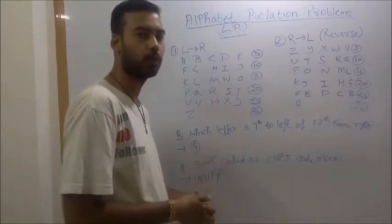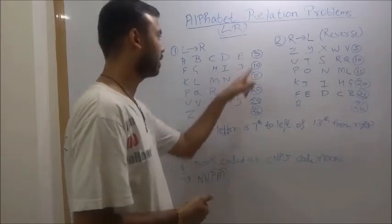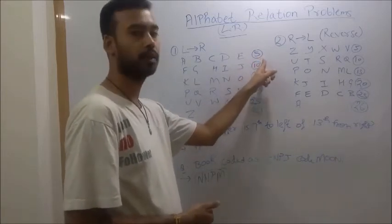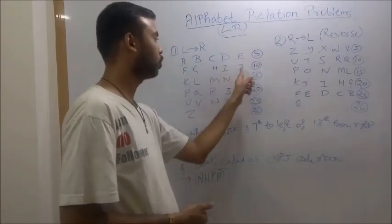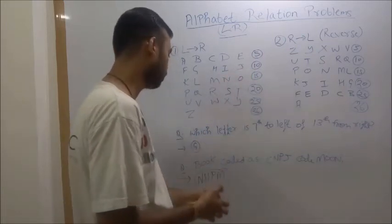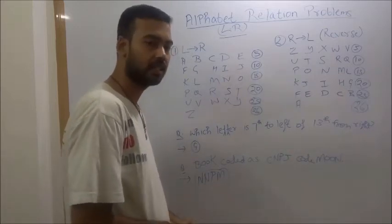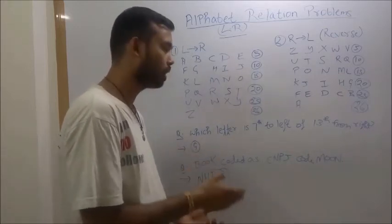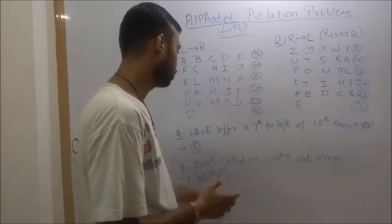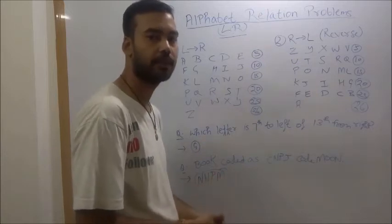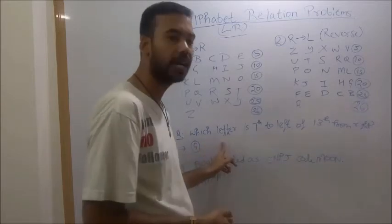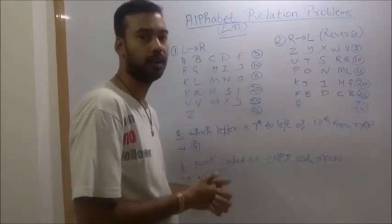You can see both the patterns. Now let's come to a kind of problem. Also mention the numbers. Here are five letters, so I have written five over here. Calculating these two rows, it becomes 10, then counting this one also 15. Now, first kind of problem I am taking is which letter is 7th to left of 13th from right. It seems difficult type of problem but it is easy.